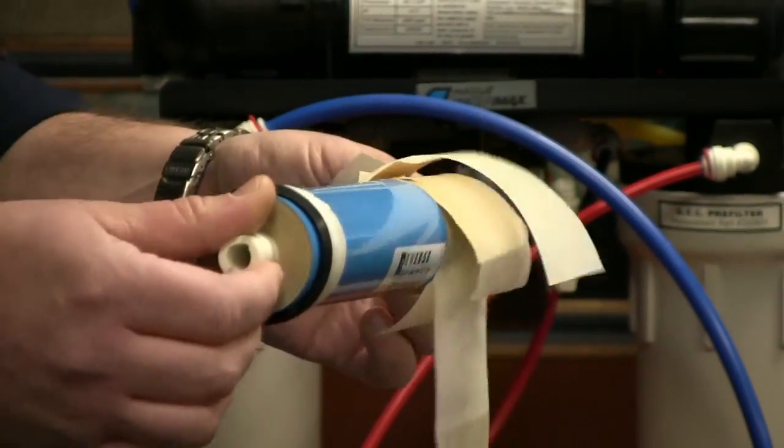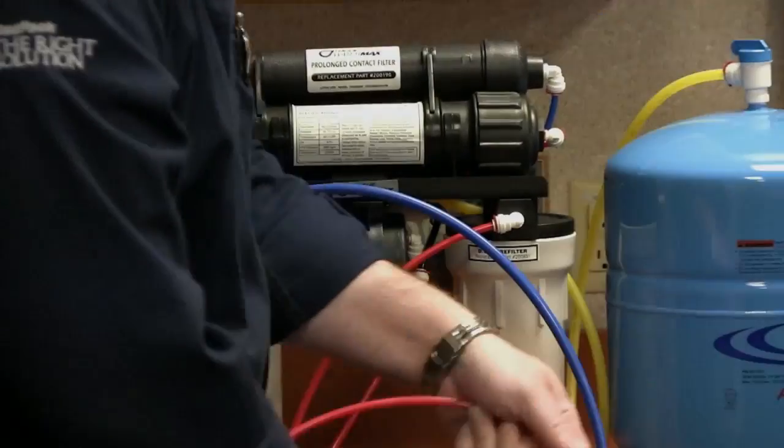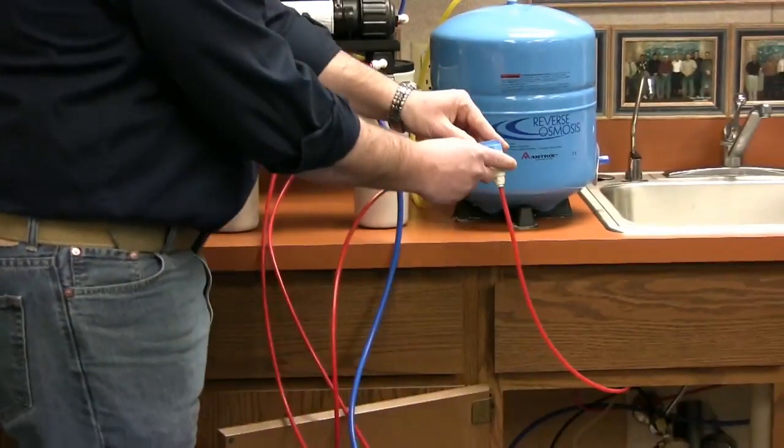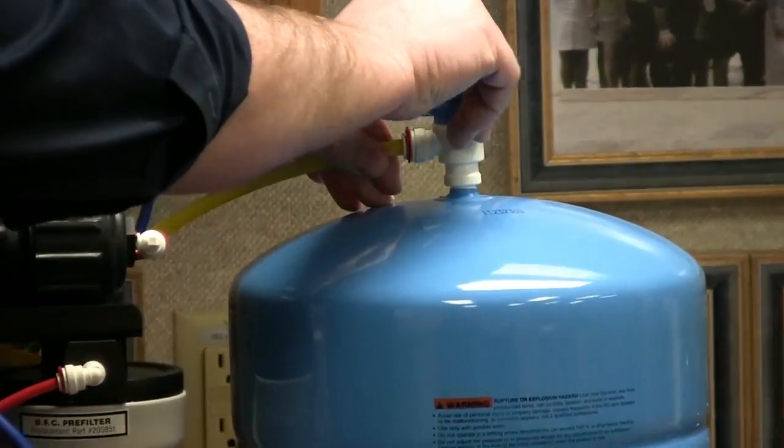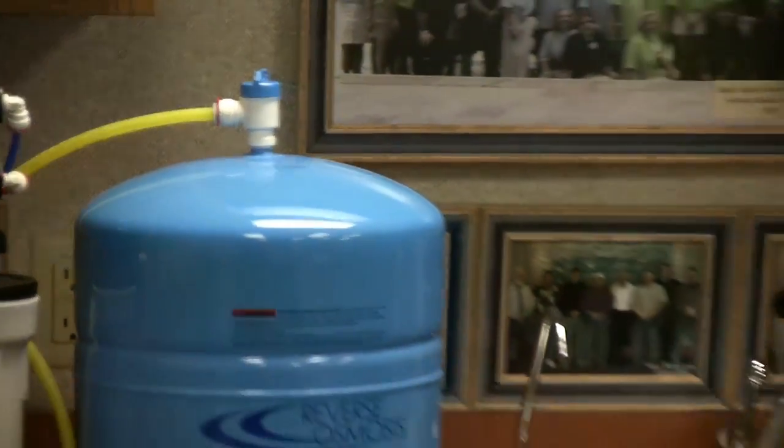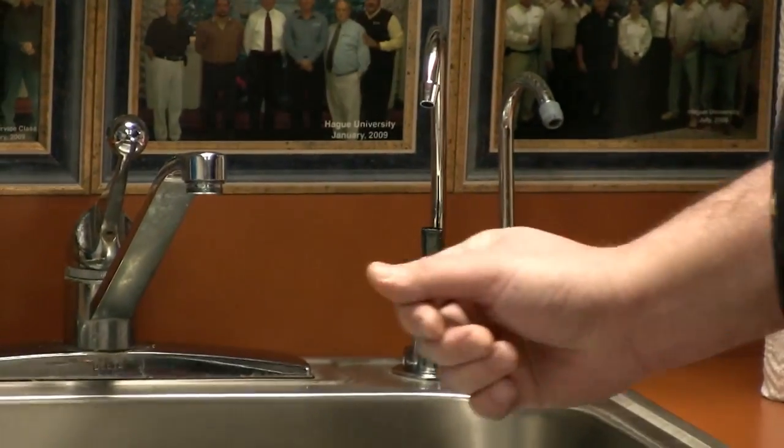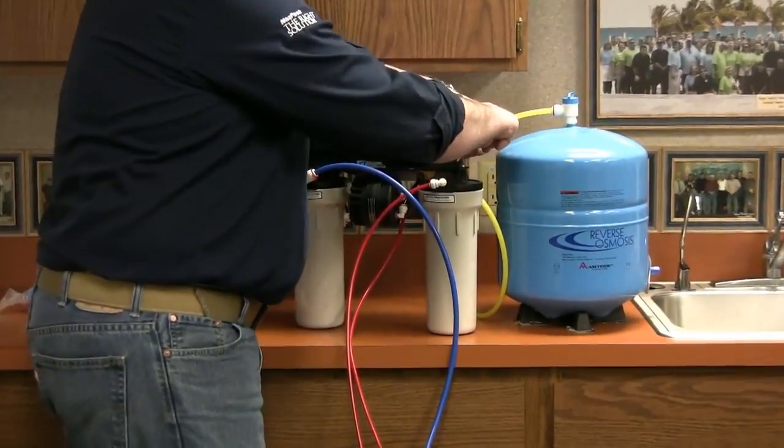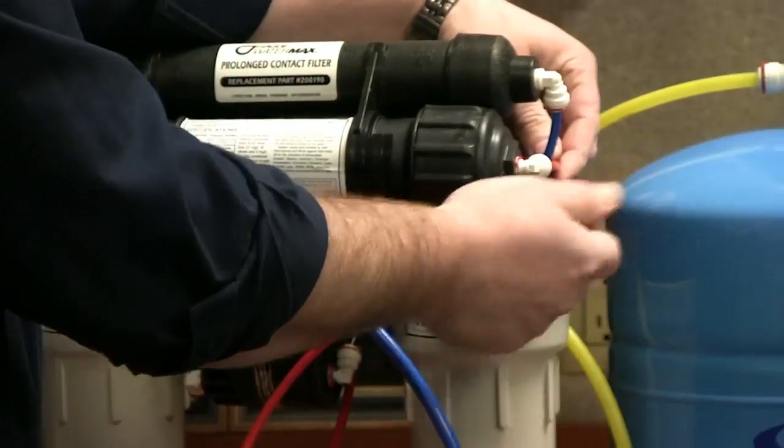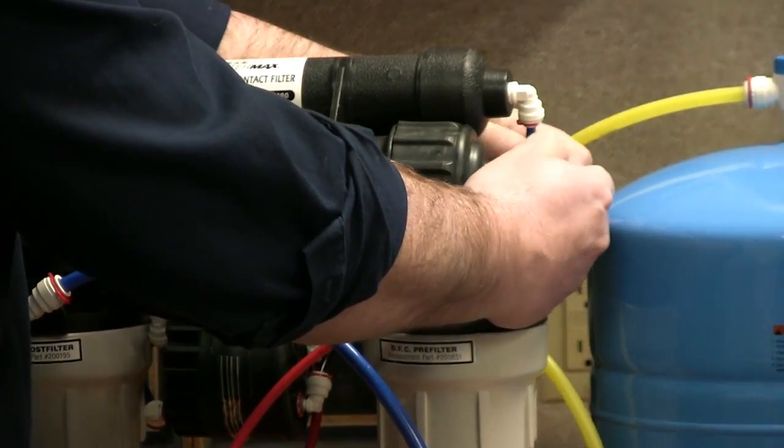Definitely don't let them freeze or get tossed around in the truck. So to replace the membrane you'll want to shut off your feed water supply, shut off your storage tank, and then depressurize the system. Once the system is depressurized, disconnect your feed line into the RO module.